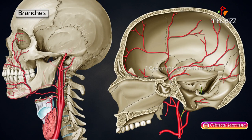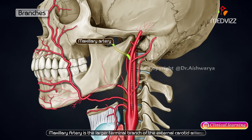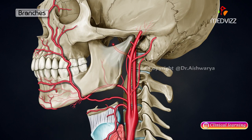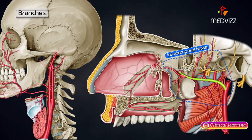The maxillary artery is considered the largest terminal branch of the external carotid artery. It begins behind the neck of the mandible, runs forwards deep to the neck of the mandible below the auriculotemporal nerve, and enters into the infratemporal fossa. It will be discussed in detail as a separate module.